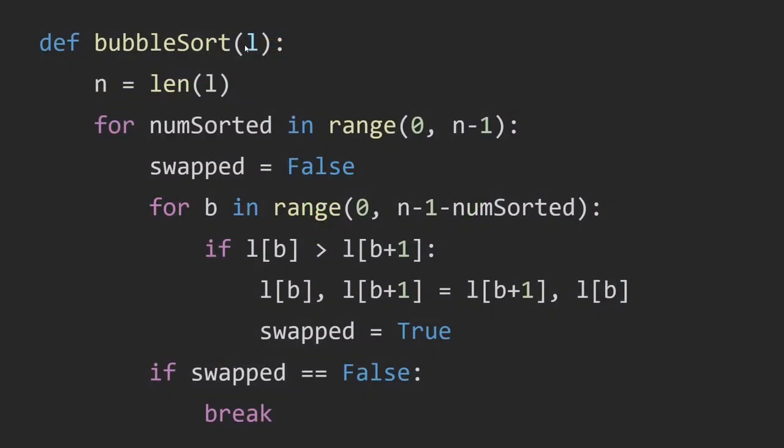Here is the code with l as our list or array. So numSorted goes from 0 to n-1 because remember in the example, if we put 3 numbers into their correct places, the last number is automatically in its correct place as well. And here is the line size. So b goes from the beginning at index 0 to n-1 and then minus numSorted. So as numSorted increases, the line size is going to decrease.